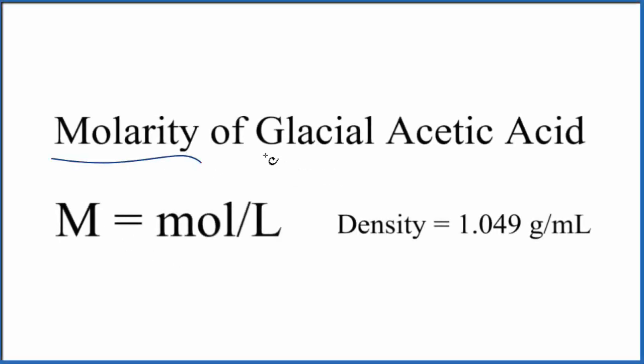Let's figure out the molarity of glacial acetic acid. Glacial acetic acid is pure acetic acid, 100% or very close. So let's assume that we have 100% acetic acid here and that it's a liquid.